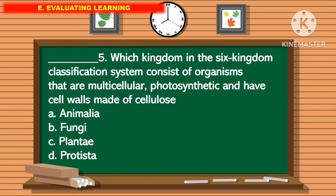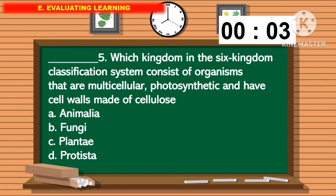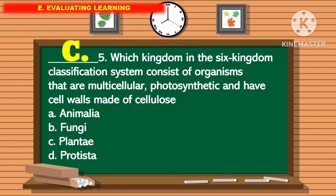For question number 5: which kingdom in the 6 kingdom classification system consists of organisms that are multicellular, photosynthetic, and have cell walls made of cellulose? The correct answer is letter C.